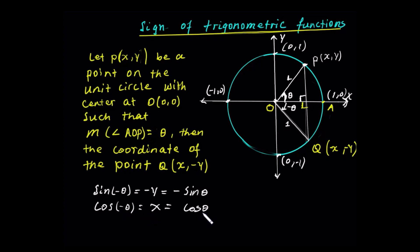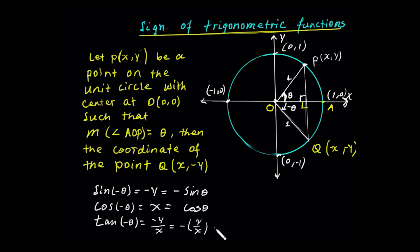Cosine of minus theta is equal to cosine of theta. Tangent of minus theta is equal to minus y over x — the negative of y over x — which is the tangent of this angle. So tangent of minus theta equals the negative of tan theta. The sine of a negative angle becomes the negative of sine of the positive angle. The cosine of a negative angle is the same as the cosine of the positive angle. The tangent of a negative angle is equal to the negative of tan of the positive angle.